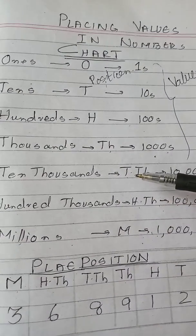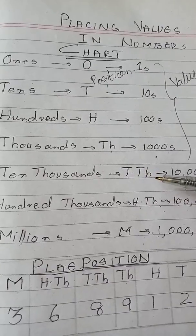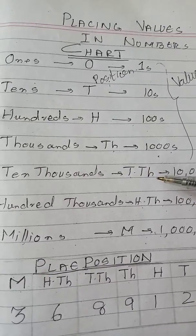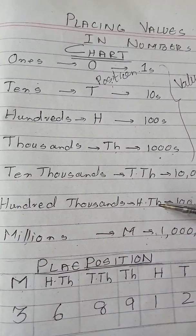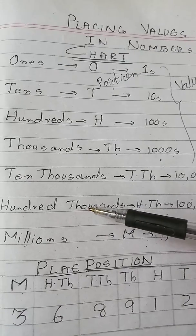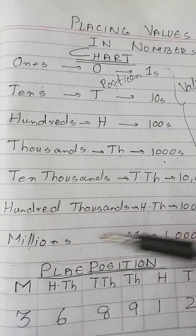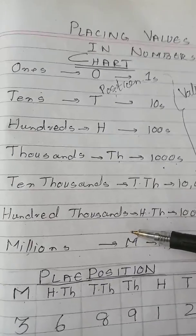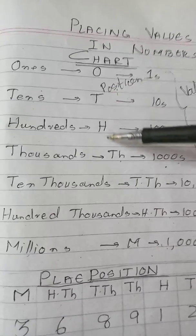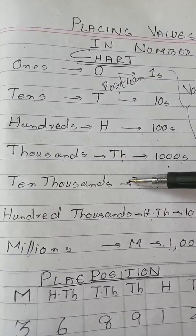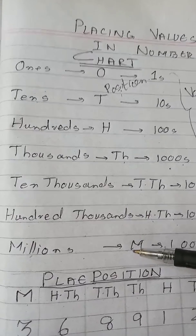Then ten thousand — capital T for ten, Th for thousand. Similarly hundred thousand — H for hundred, Th for thousand. And millions — capital M. Now these are the positions and places of any digit in any number.